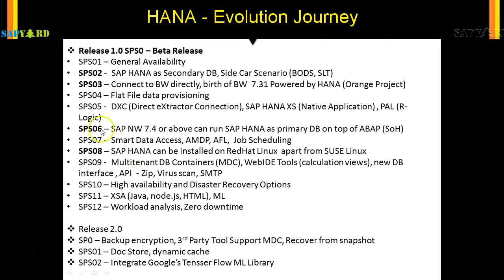Finally, in Service Pack 6, there was a major breakthrough — HANA could now run on top of ABAP. So instead of just going to BW, you could run your regular business on HANA. But remember, this is ABAP on HANA, not S/4HANA — S/4HANA was not in the picture yet. This means you have the ECC system but instead of running on Oracle, you run it on HANA and still get the benefit of the in-memory database.